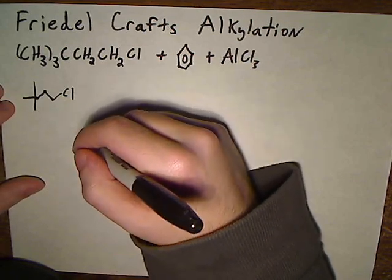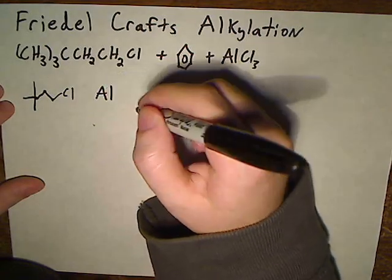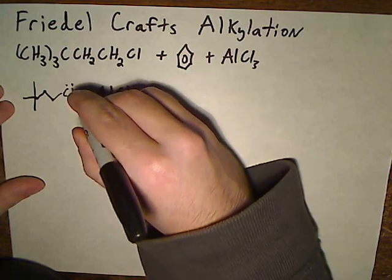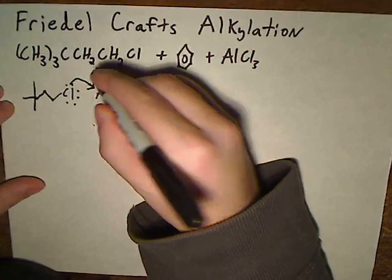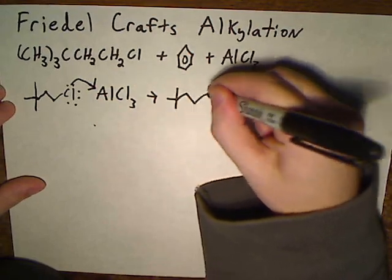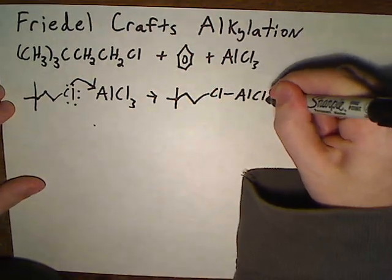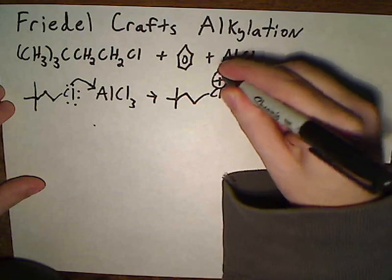The first step of these Friedel-Crafts alkylation reactions, we take our Lewis acid and it's going to act like a Lewis acid and take these electrons from the chlorine, and that's going to give us this compound right here, which we now have a positive charge on this chlorine.